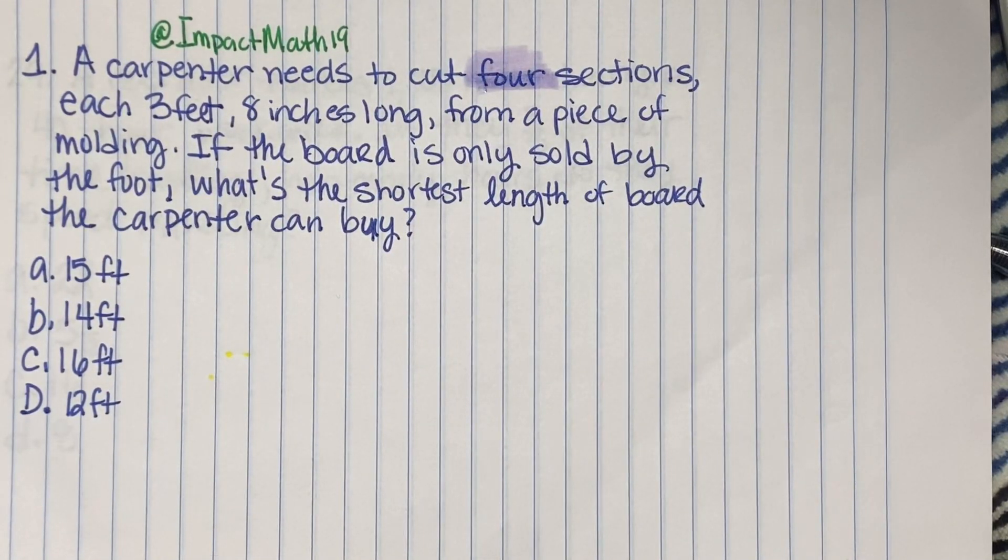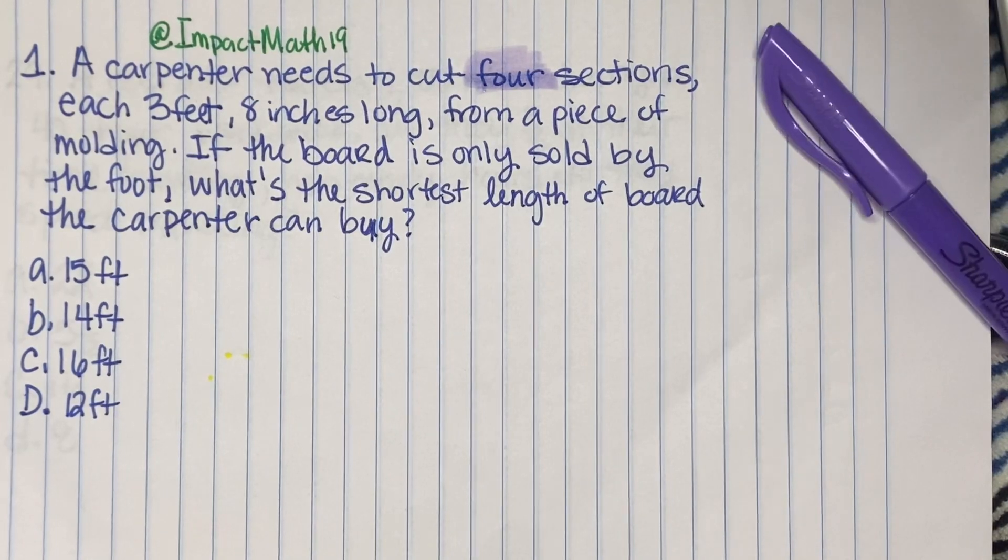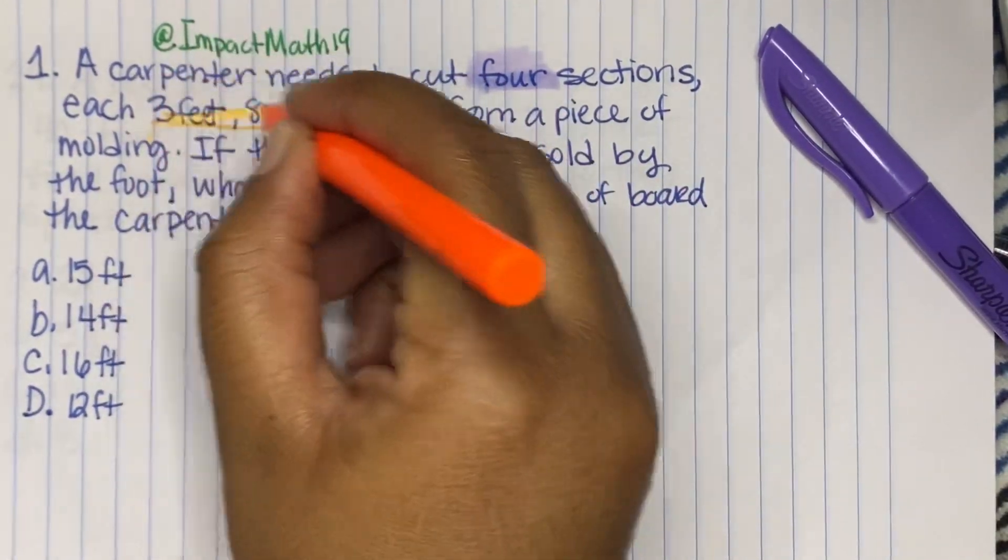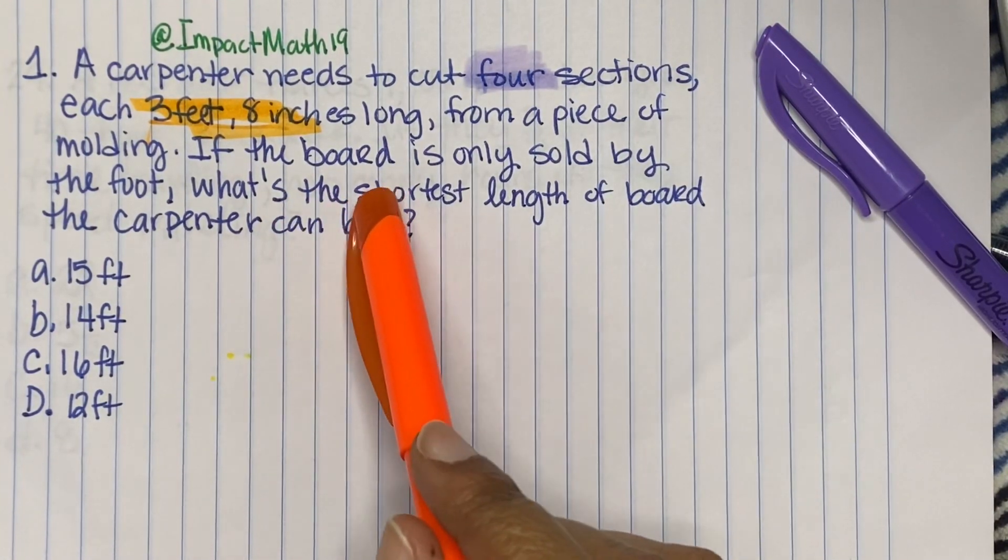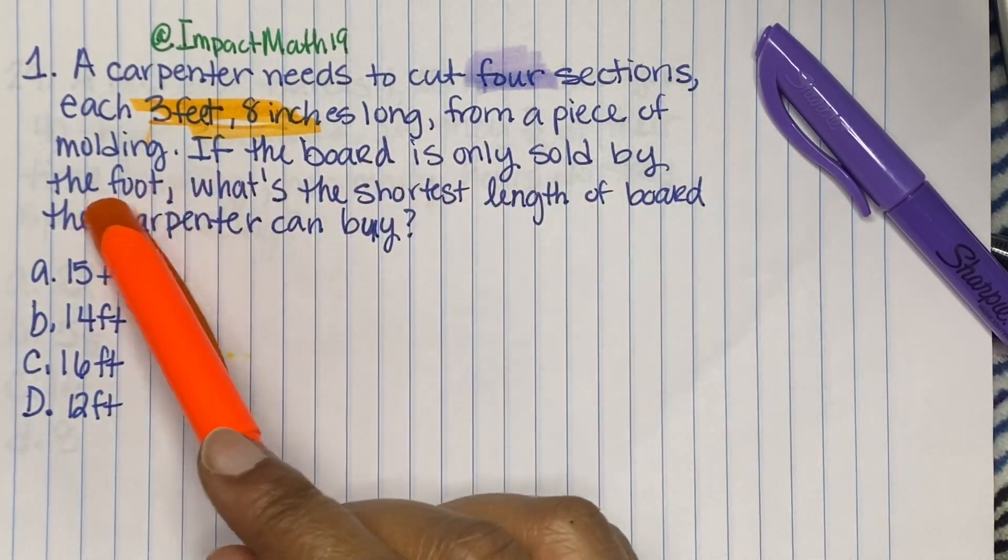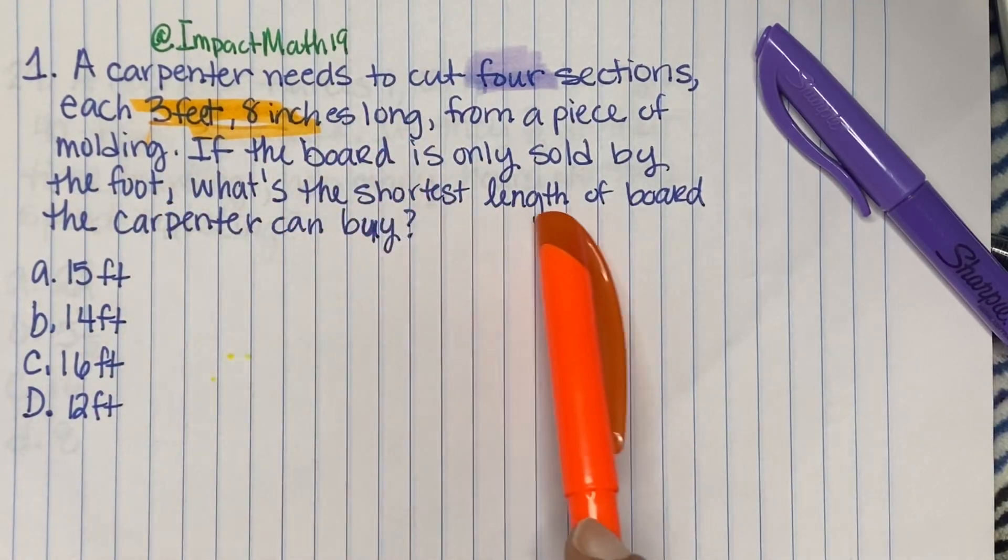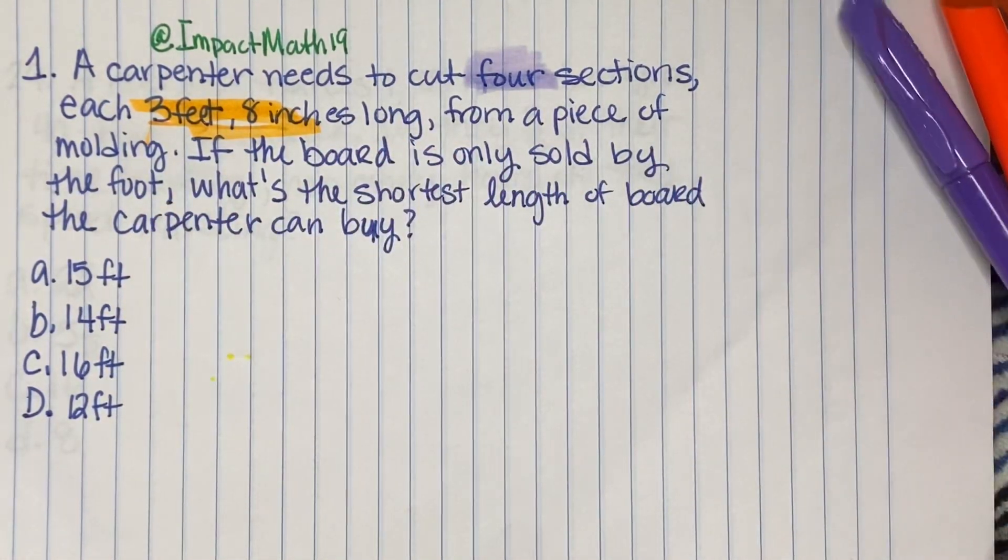Each one of those sections is three feet and eight inches long. If the board is only sold by the foot, what's the shortest length of board a carpenter can buy?